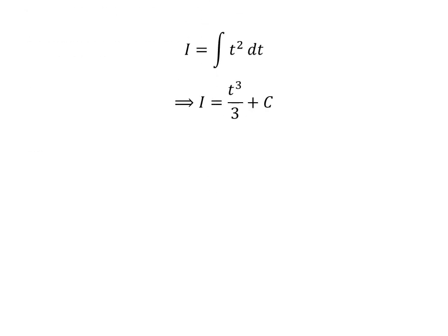We know the integral of the square of t is the cube of t upon 3. So i is equal to the cube of t upon 3 plus capital C. Capital C is the arbitrary constant of indefinite integral. Never forget to add this constant.